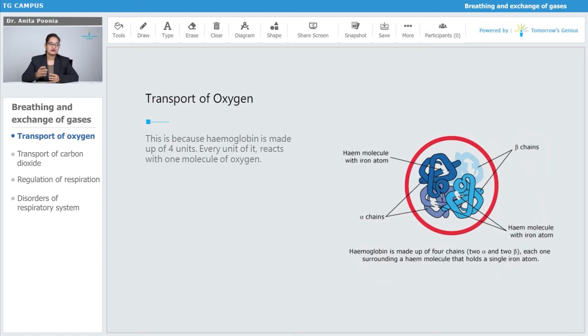This is the heme molecule with the iron atom. Iron is a very important element in the molecular structure of hemoglobin. This is the beta chain, this is the alpha chain. Hemoglobin is made up of four chains: two alpha and two beta, and each one of them is surrounded by a heme molecule that holds a single iron atom.